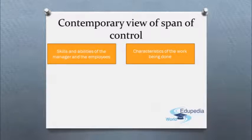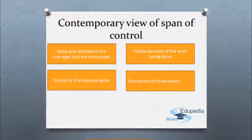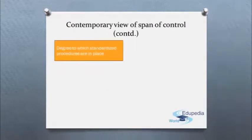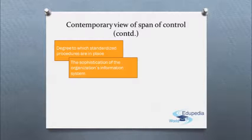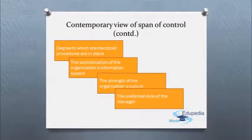Other contingency variables that determine the appropriate span include similarity of employee tasks, the complexity of those tasks, the physical proximity of subordinates, the degree to which standardized procedures are in place, the sophistication of the organization's information system, the strength of the organization's culture, and the preferred style of the manager.